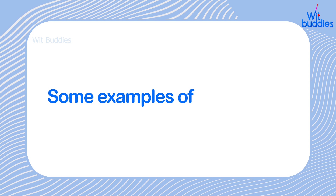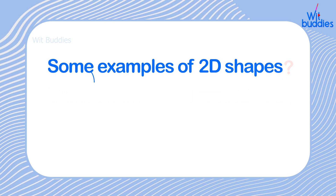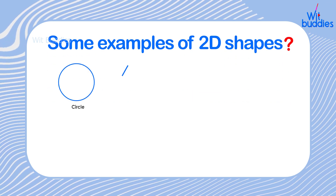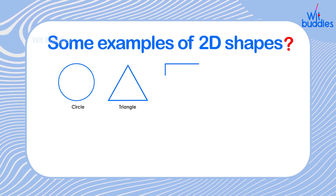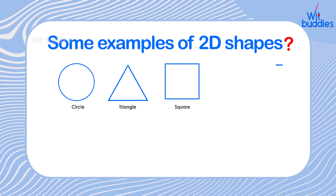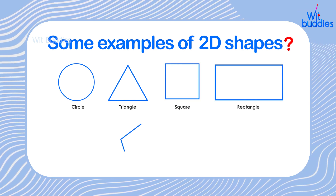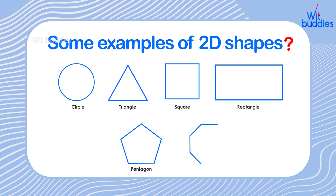Examples of 2D shapes: The basic types of 2D shapes are a circle, triangle, square, rectangle, pentagon, octagon, etc.